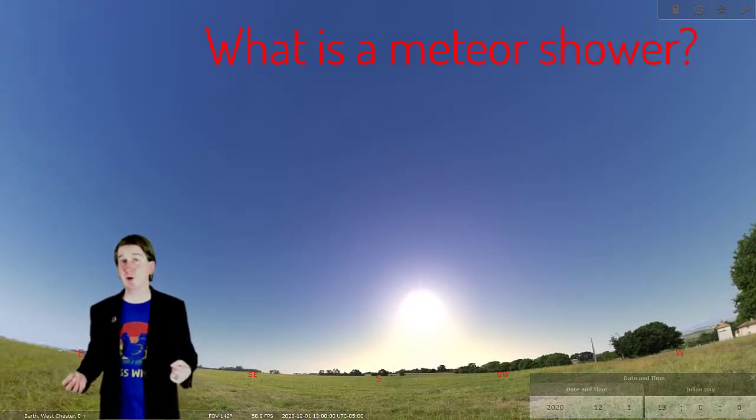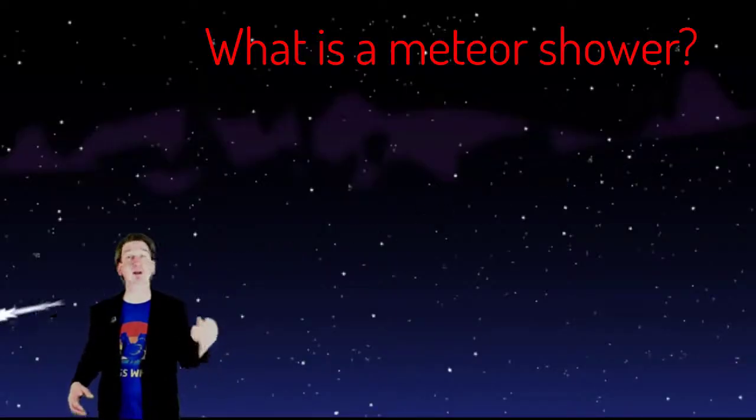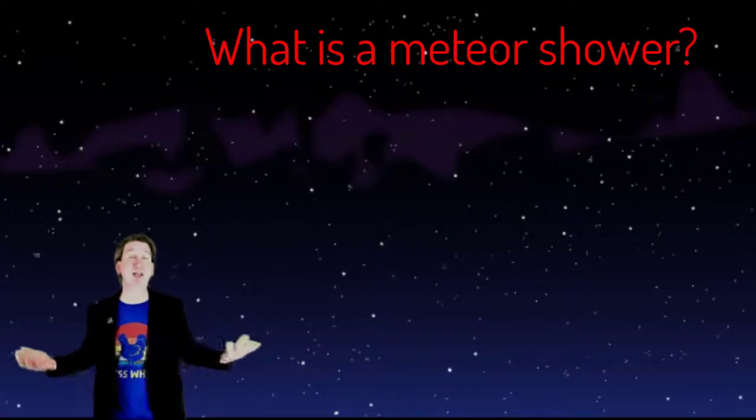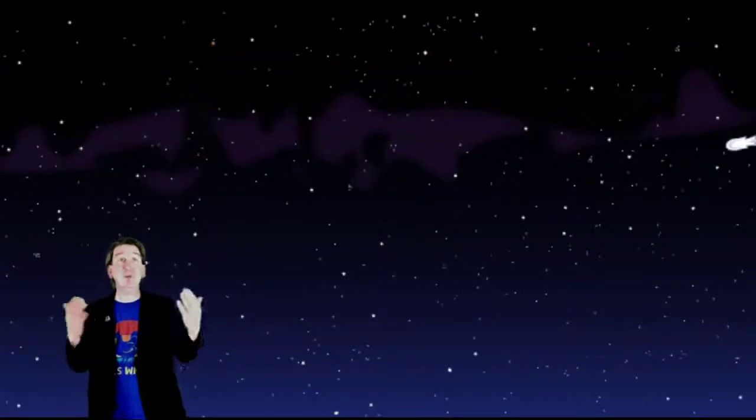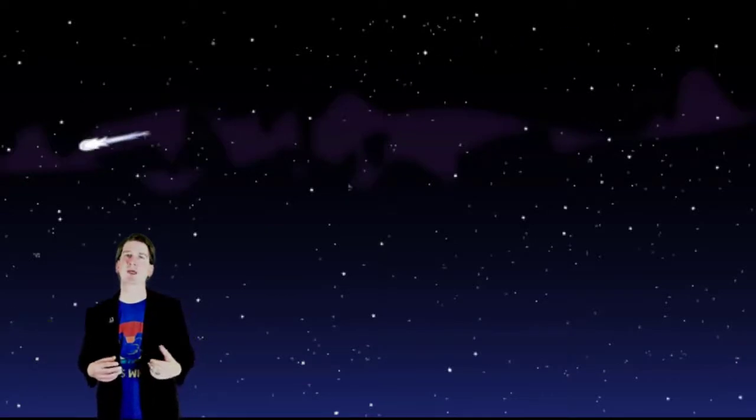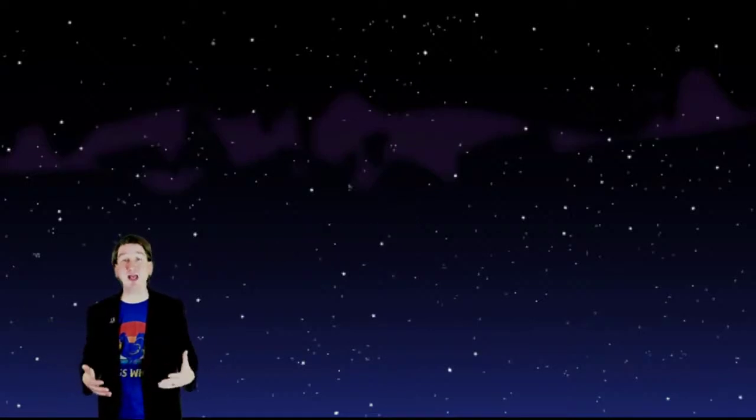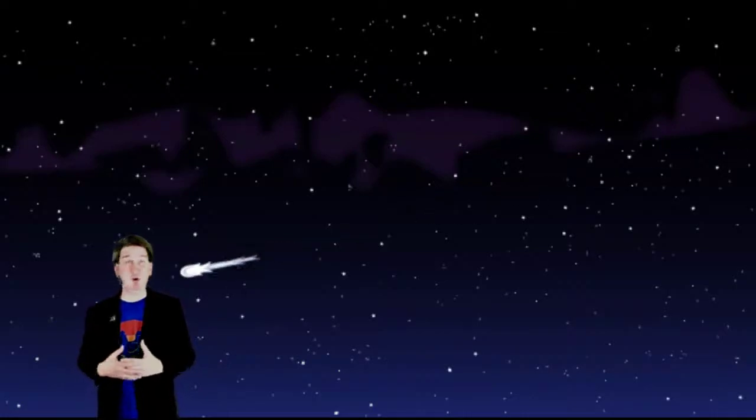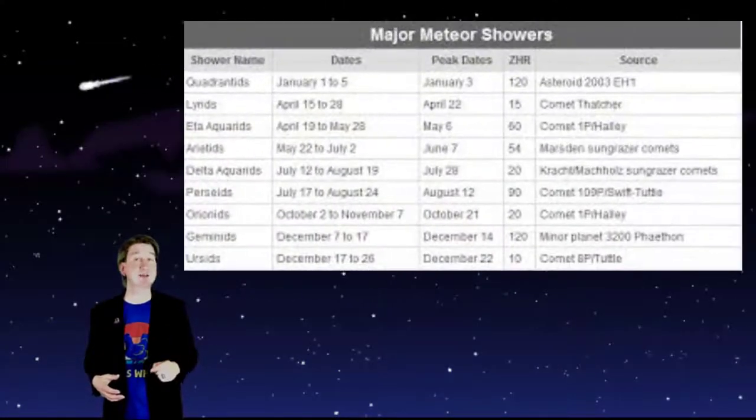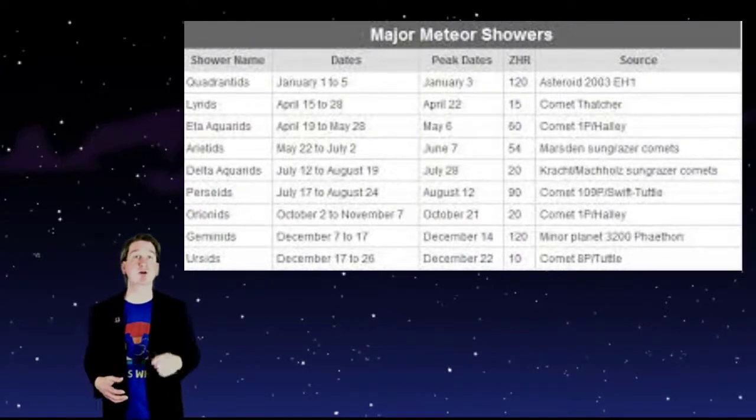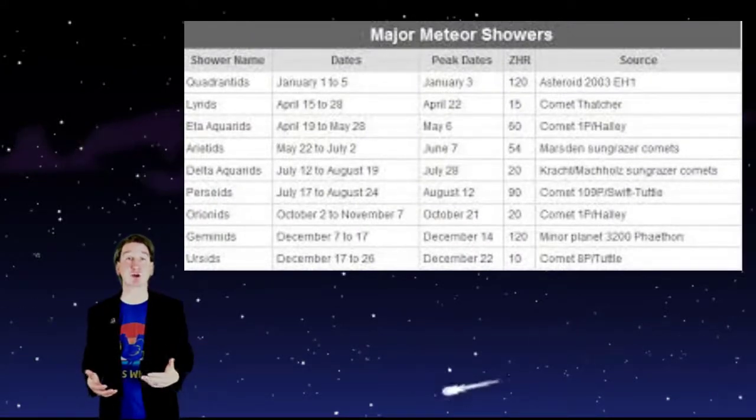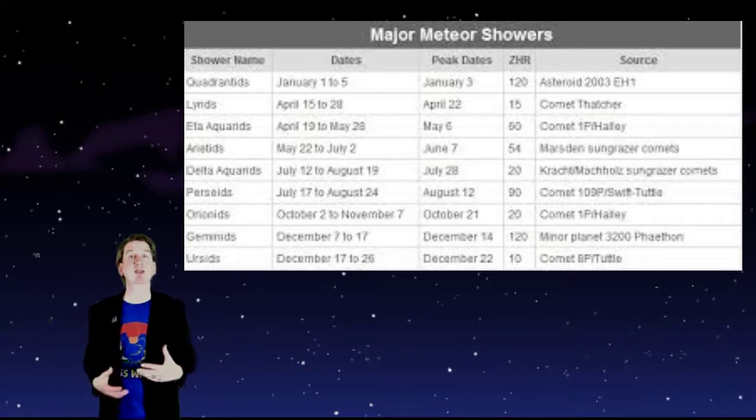So what is a meteor shower? A meteoroid can hit the Earth's atmosphere at any random time, and you might happen to see a meteor in the sky. But these random events are not predictable. You could sit outside on any night and stare at the sky, and maybe see one, a few, or no meteors at all. But there are about 10 times a year when astronomers know the Earth will encounter many meteoroids for about a week, and you can expect to see many meteors in a night.